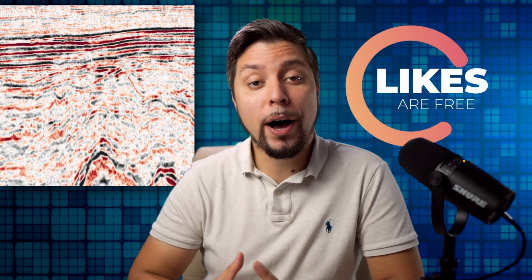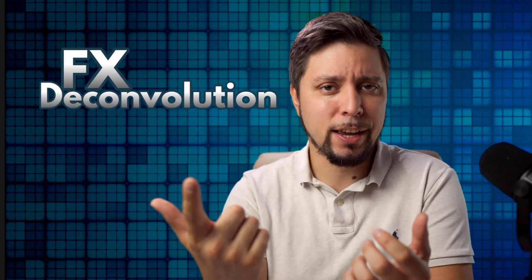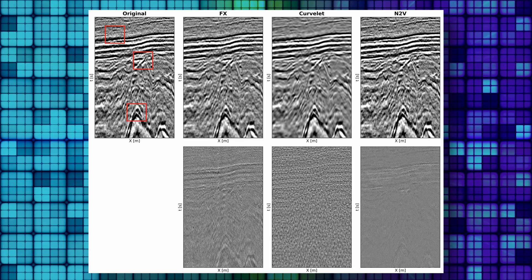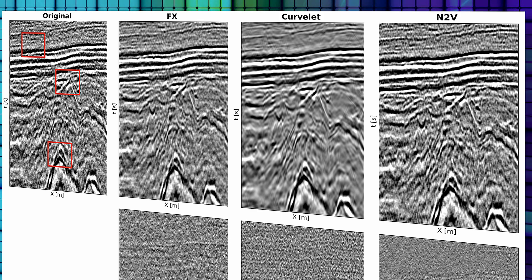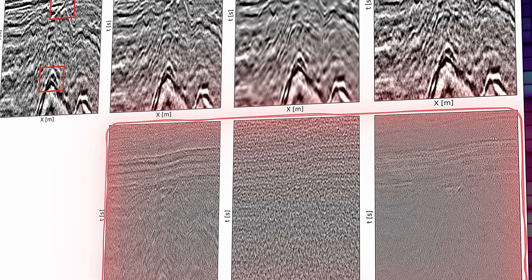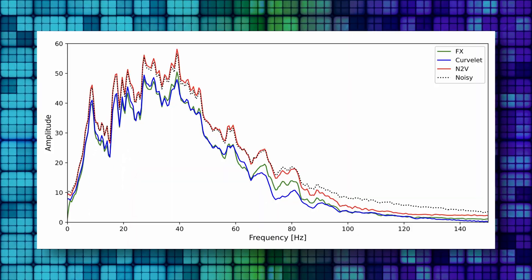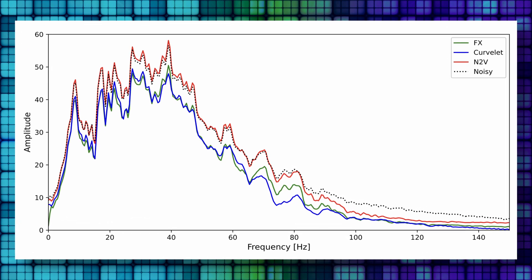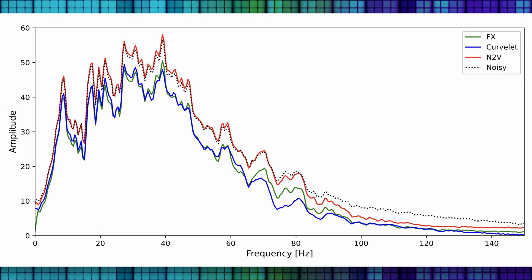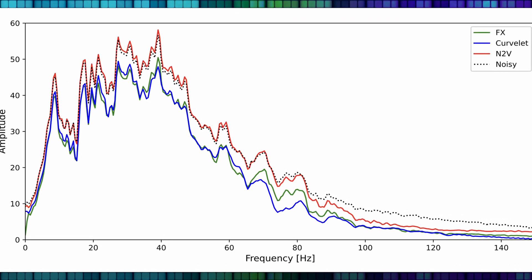The denoising network is then applied to field data and compared with two commonly used random denoising techniques: f-x deconvolution and the curvelet transform. The denoised results from these three approaches are displayed. The proposed network shows better results than the other methods, though some signal leakage is still present, it is not as pronounced as in the other methods. Data from f-x deconvolution and curvelet domains shows energy has been lowered across all bandwidths, while Noise2Void shows less reduction.